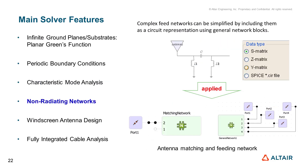With non-radiating networks, complex feed networks can be simplified by including them as a circuit representation using general network blocks. The general network blocks can include S-parameters, Z- or Y-parameters, or SPICE circuits. These can be applicable for antenna matching or feeding network design.